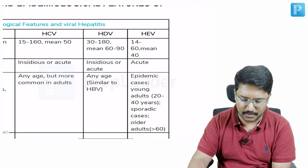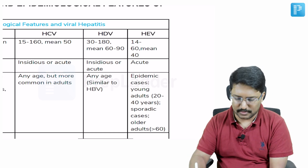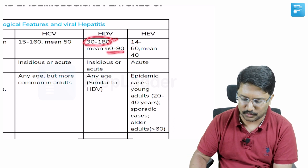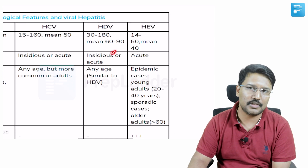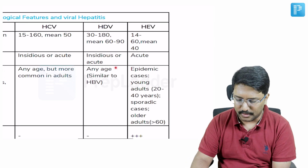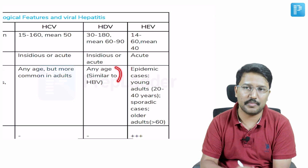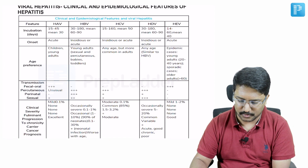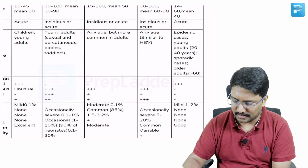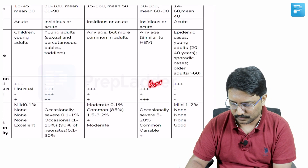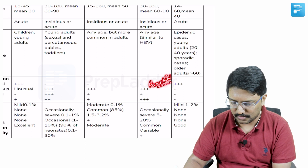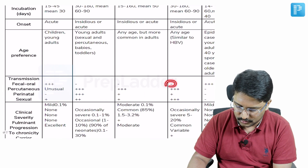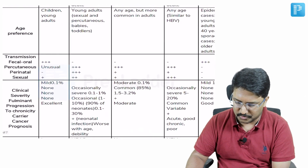Talking about HDV — it is an incomplete virus. Its incubation period is around 30 to 180 days with a mean of around 60 to 90 days. Onset could be insidious or acute. Its age predilection is similar to HBV because it is dependent on HBV. The route of transmission is parenteral — sexual, percutaneous, and perinatal — with no feco-oral route of transmission.